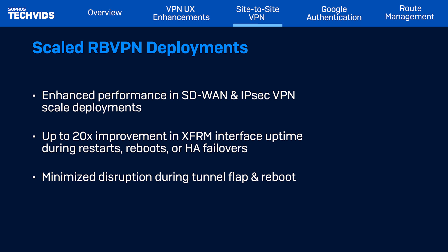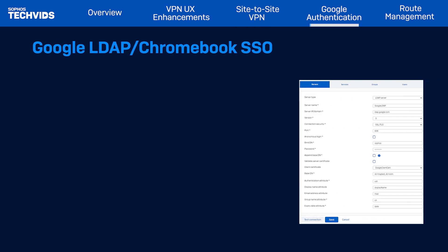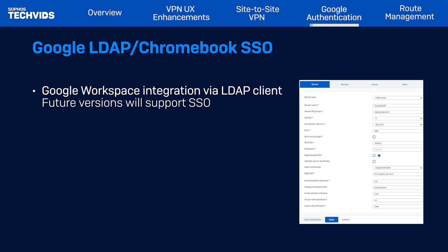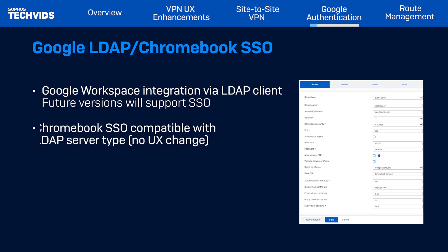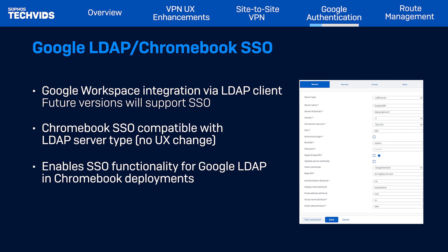Now let's move on to Google Workspace authentication. In response to the growing adoption of Google Workspace and the demand for integration with firewalls, this release introduces support for integrating Google Workspace using a regular LDAP client. Future releases will also support Google Workspace SSO integration. Additionally, Google Chromebook SSO is now compatible with LDAP type servers, which were previously limited to Active Directory. This enhancement will enable SSO functionality over Google LDAP integration in deployments using Chromebooks.